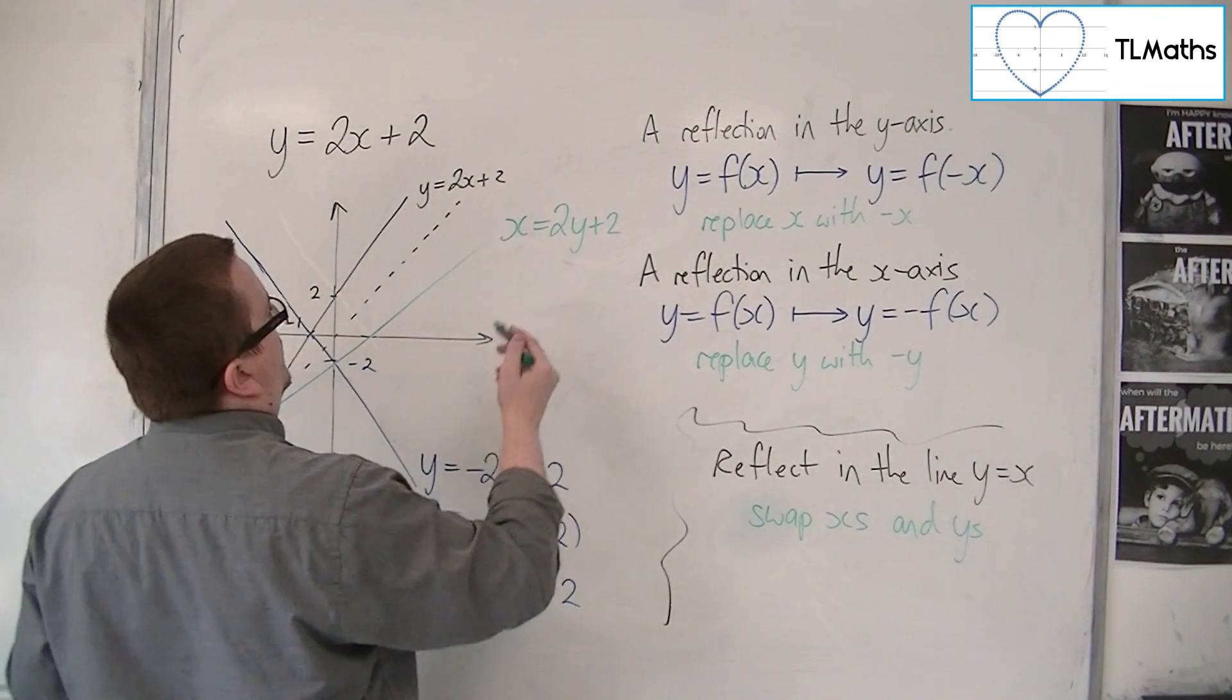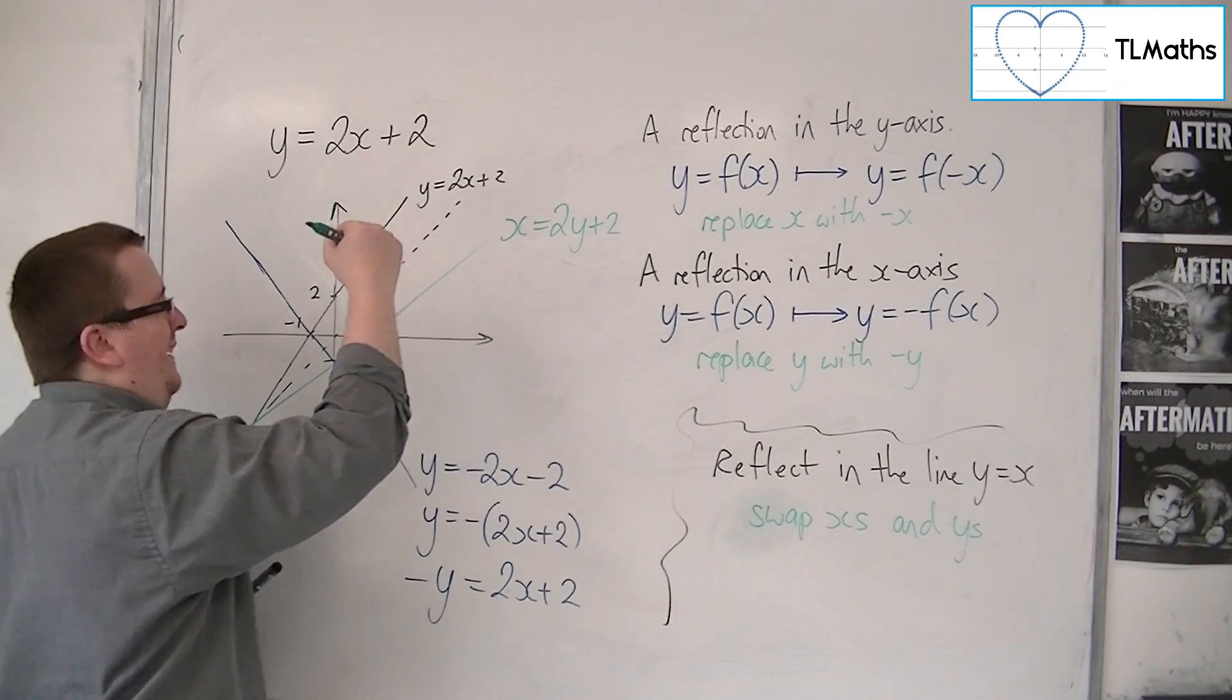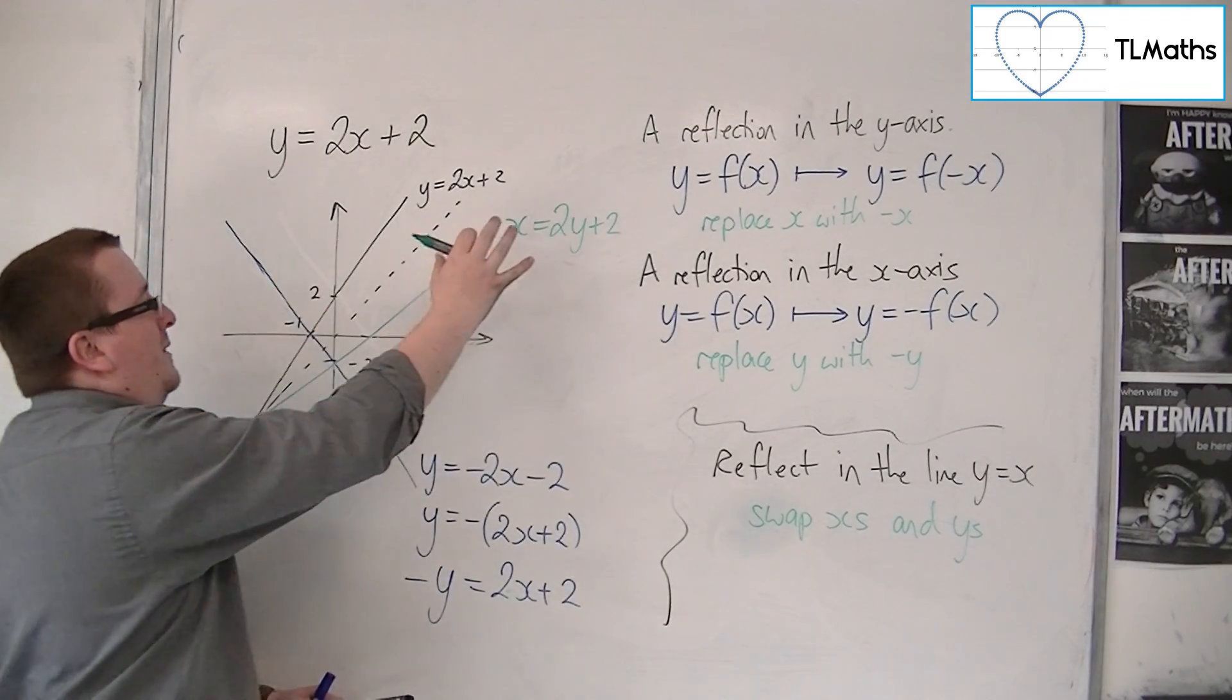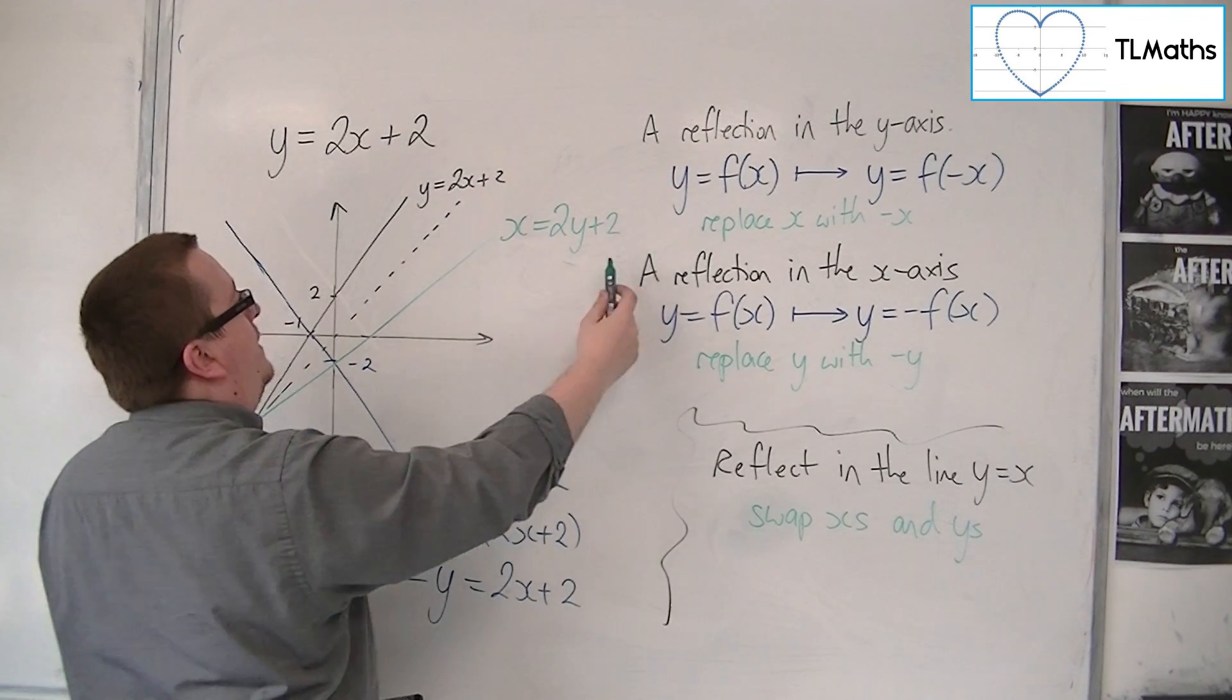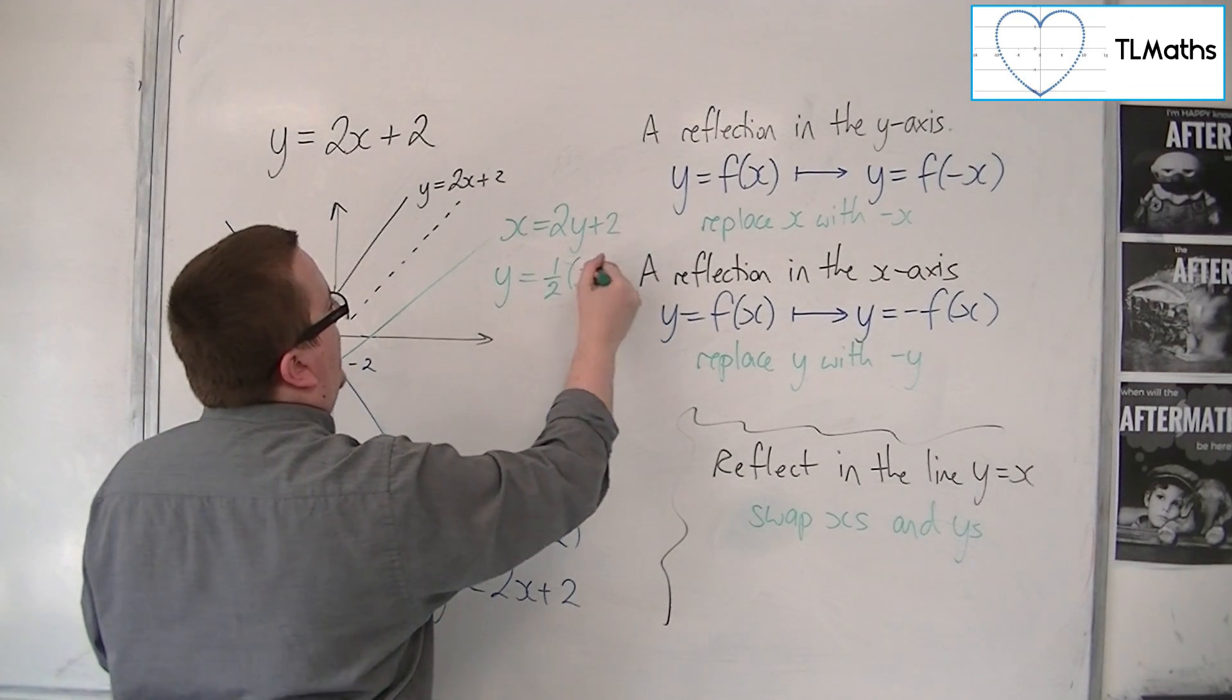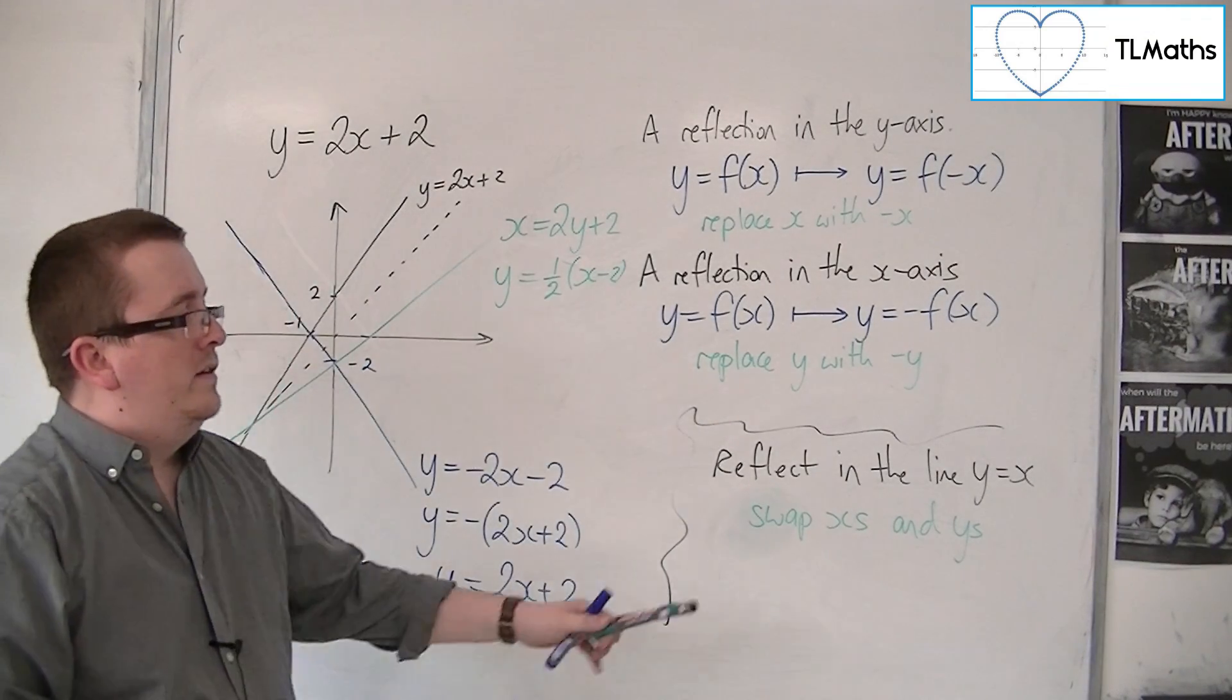OK, so you replace the y with x and the x with y, so you swap the letters. Oh, dear, I'm probably going to pay for that one. You swap the letters, and then you could rearrange it. So you get y is equal to one-half lots of x minus 2, OK? And so that's how you can reflect in the line y is equal to x. But as I say,